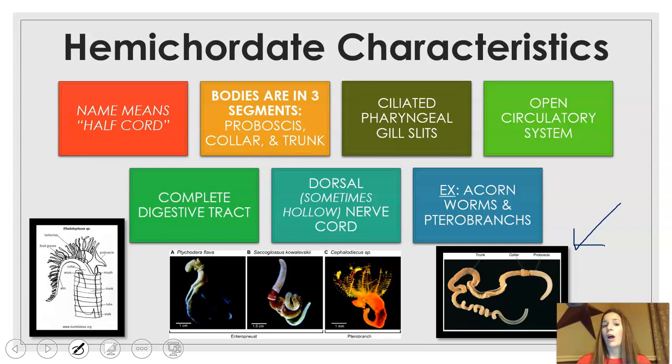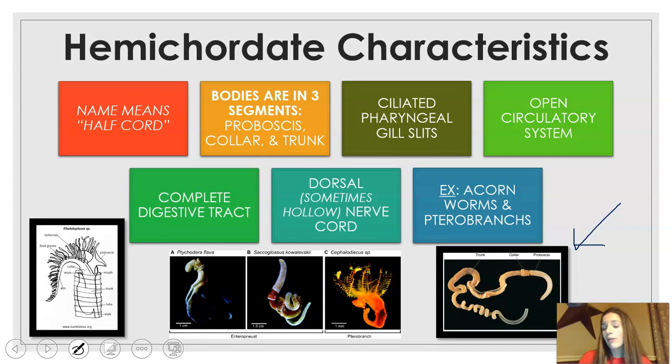They do have some structures that make them hemichordates. They have ciliated pharyngeal gill slits, and as we'll see in a minute, those gill slits are an important characteristic of chordates as well. They have an open circulatory system, so they don't have a developed heart and blood vessels. They do have a complete digestive tract — a mouth and an anus, two openings. They also have a dorsal nerve cord, which can be hollow sometimes depending on the species.